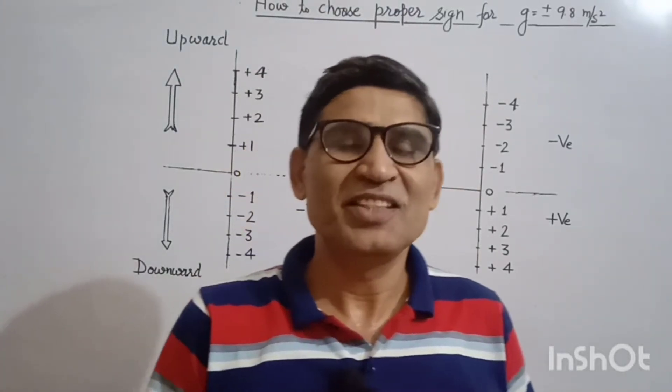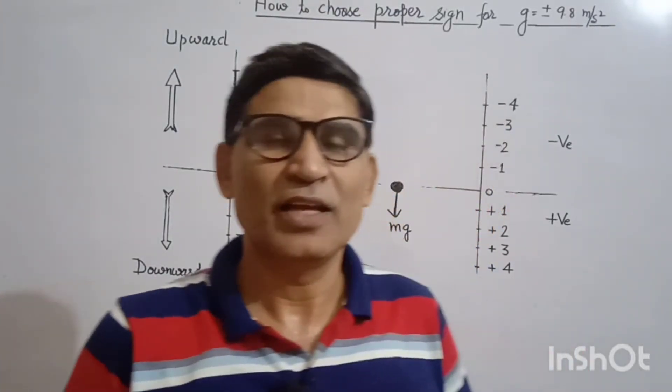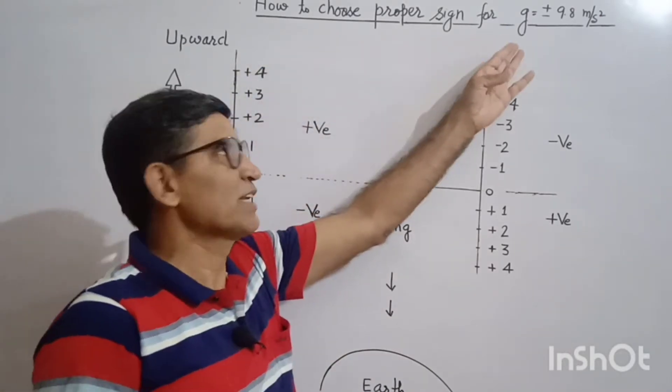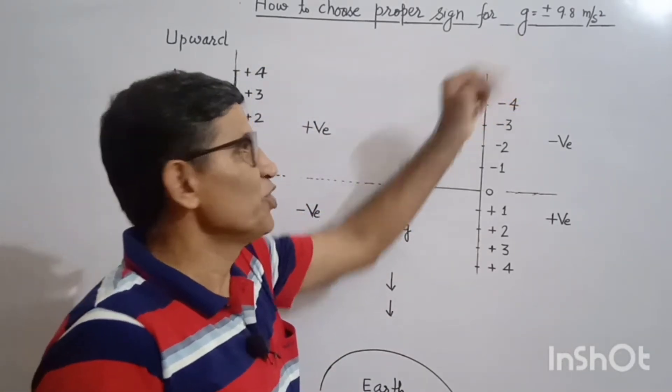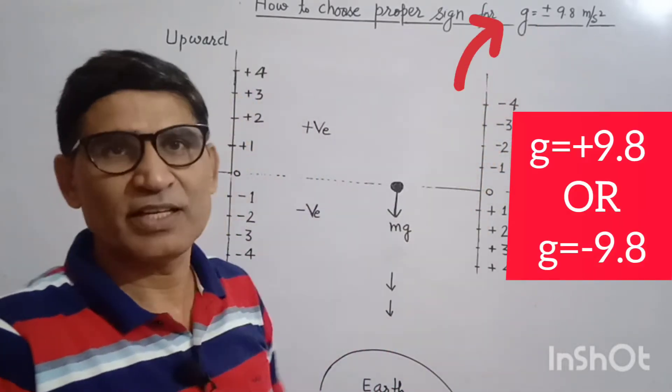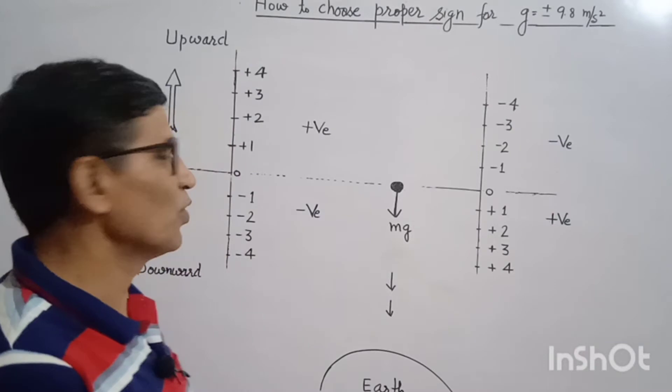Hello and welcome. In this video I am going to explain an easy and proper way how to choose proper sign for acceleration due to gravity. Whether we should take it plus 9.8 meter per second square or minus 9.8 meter per second square. Okay let's see.